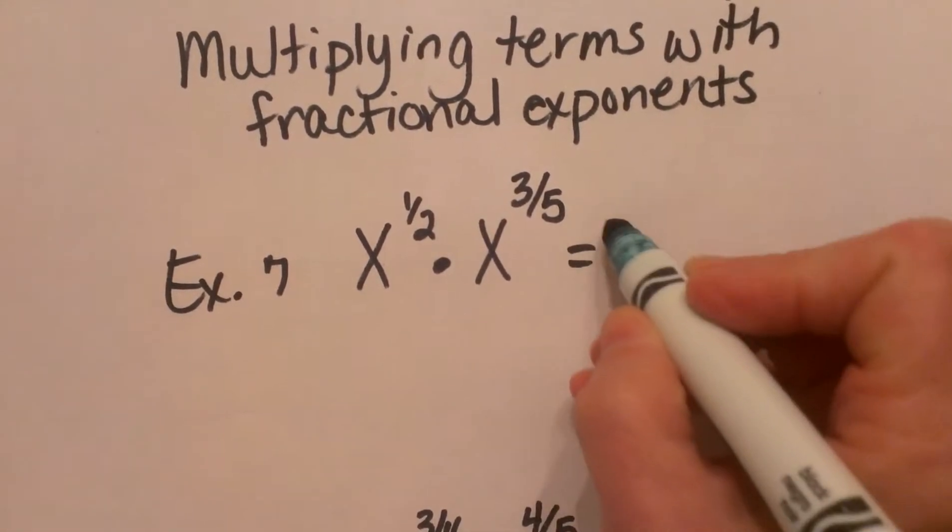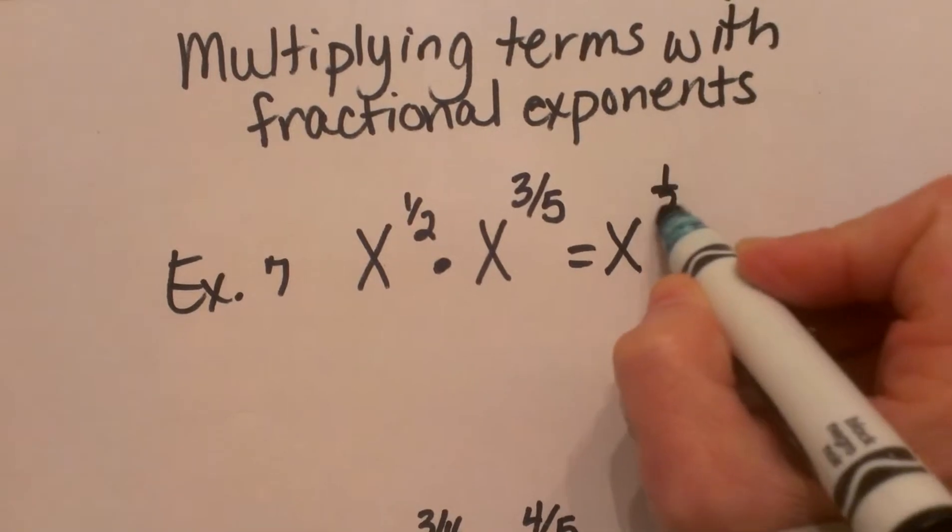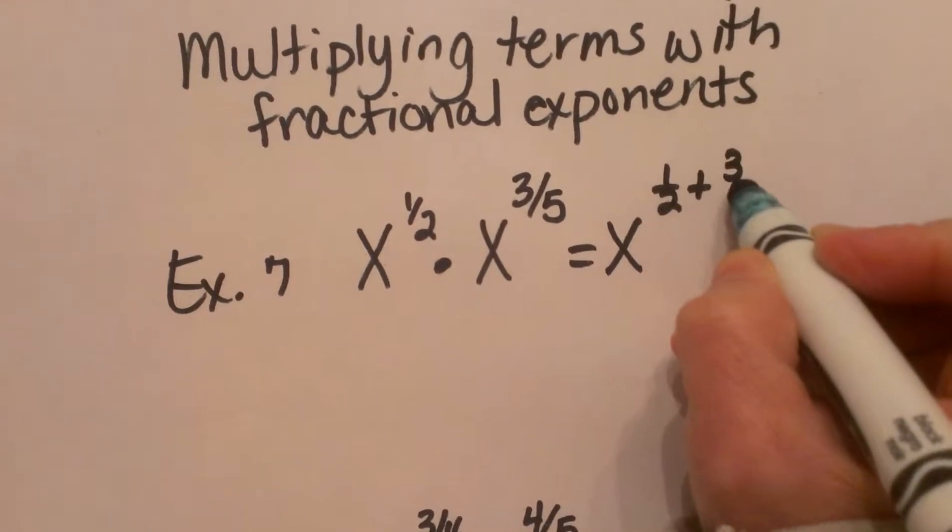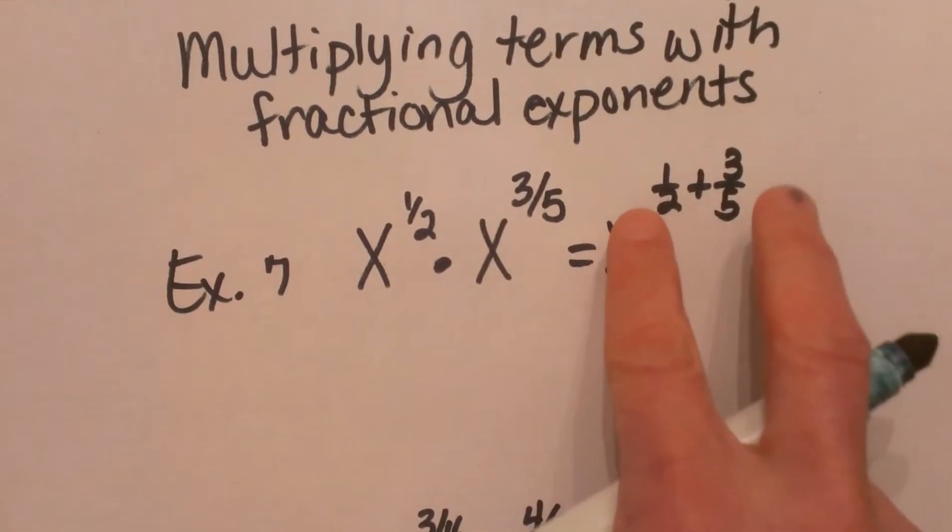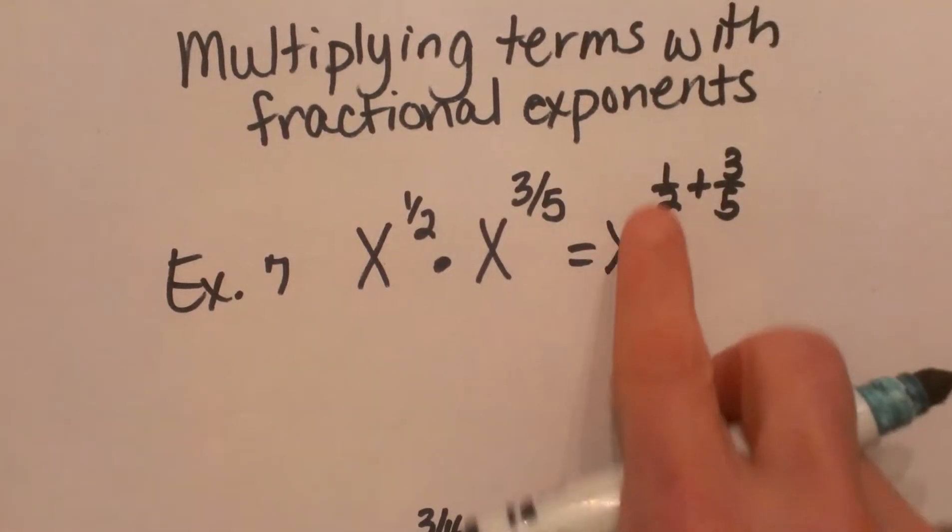So what we're going to do is we're going to write this as x to the 1 half plus 3 fifths. Now to add two fractions, remember we need a common denominator.